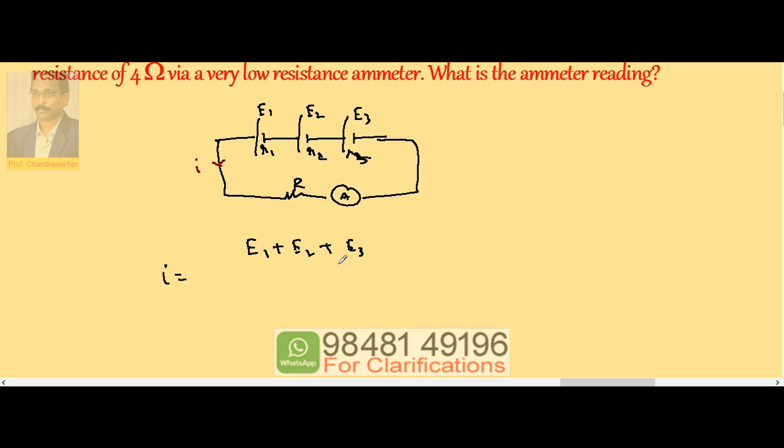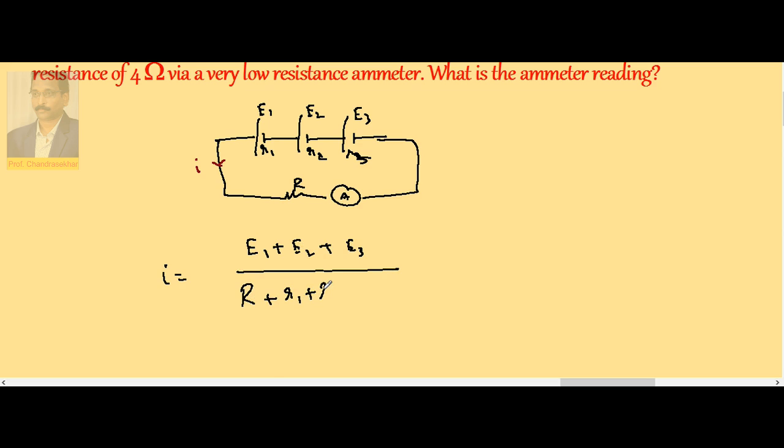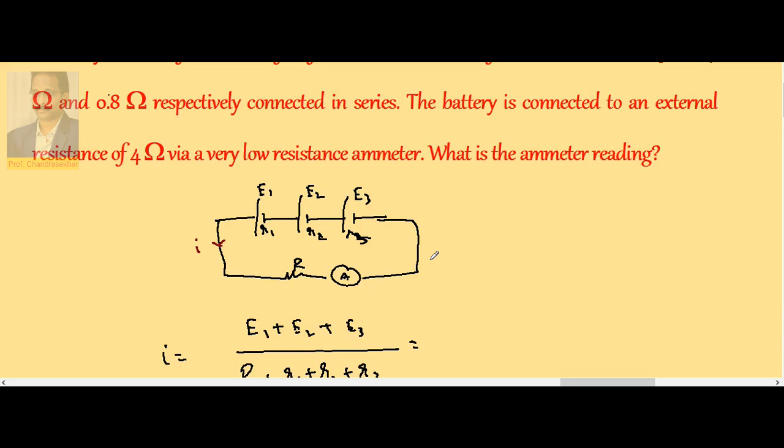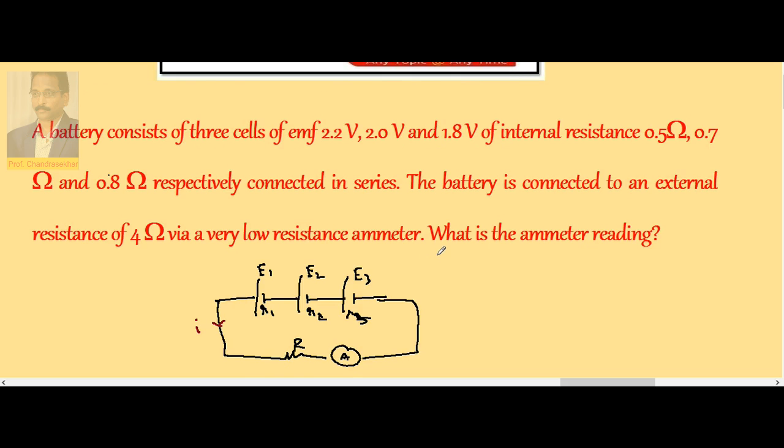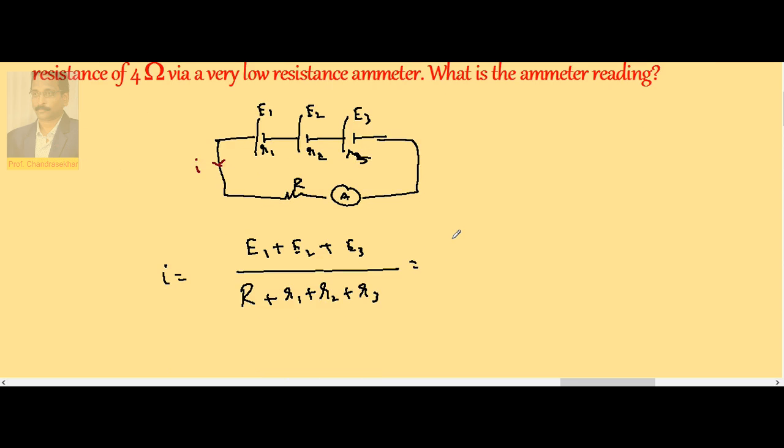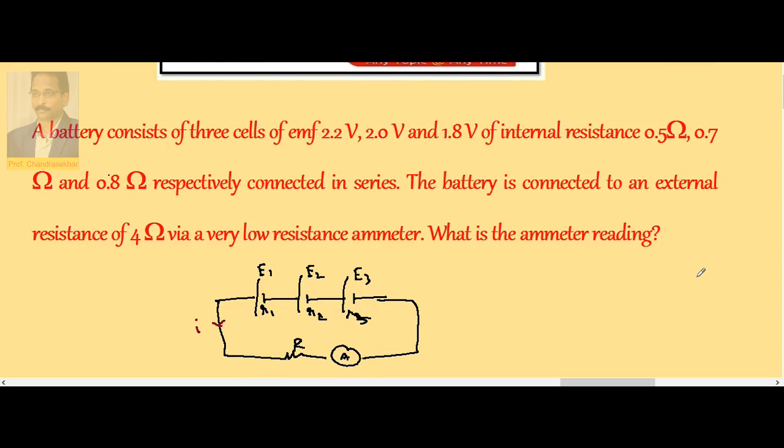R plus R1 plus R2 plus R3. So this is the reading of the ammeter. Now what are E1, E2, E3? 2.2, 2, and 1.8 volts divided by total resistances, internal resistance plus external: 4, 0.5, 0.7, and 0.8.